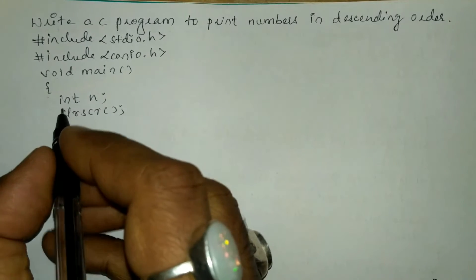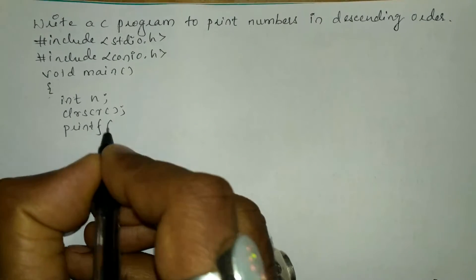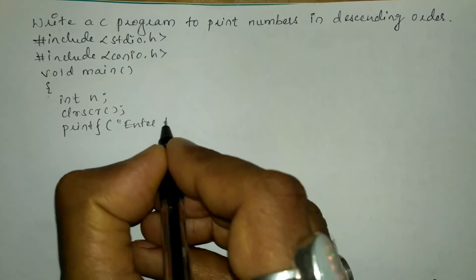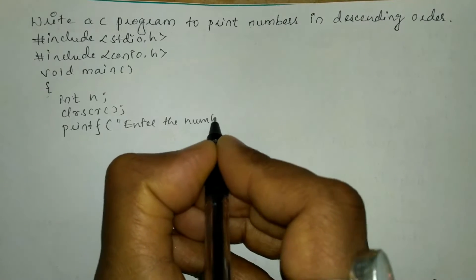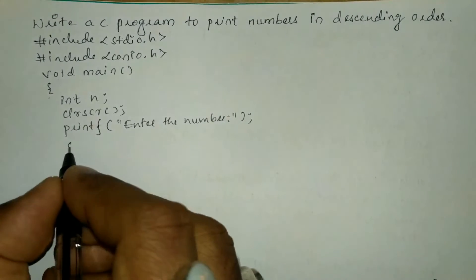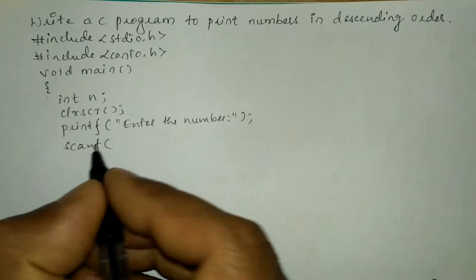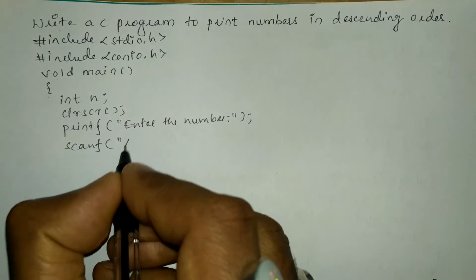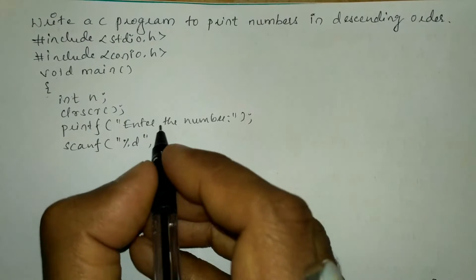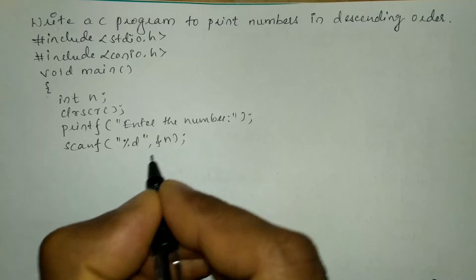Now I'm going to ask the user to enter the number using a printf statement. In double quotation marks I'm going to write "enter the number" and put a semicolon. Now we are going to receive the response from the user through the keyboard using a scanf statement. In double quotation marks I'm going to write the %d format specifier, put a comma, and then we are going to take this variable n.